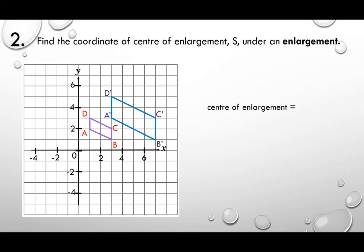To find the coordinate of the center of enlargement, you can only use straight lines to determine the center. Connect corresponding points: image point D' to object point D — draw a straight line. You must use a minimum of two lines. Choose another corresponding pair, C' and C. The intersection point is the center O. The center of enlargement is negative 1, and 1, so (-1, 1). Remember, start from X first.